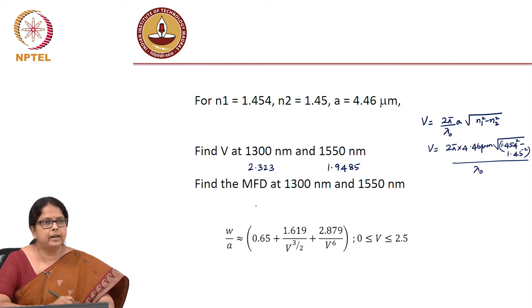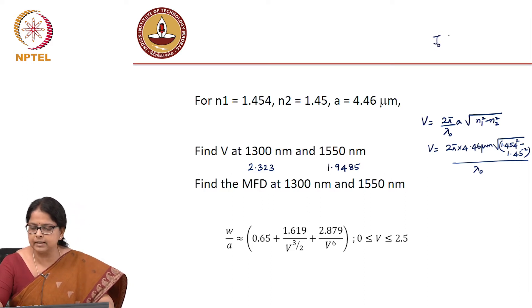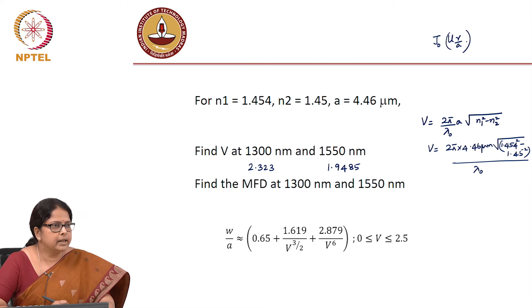You also want to know what is the mode field diameter. And you know, last time we discussed that the fundamental mode, even though it was represented as J naught UR over A, even though it gets represented this way, you could very well approximate it as a Gaussian. And the 1/e width you calculate, and twice of that 1/e width is what you call as a mode field diameter.